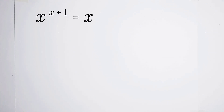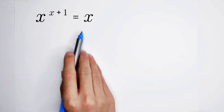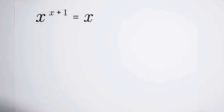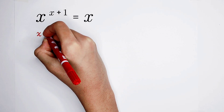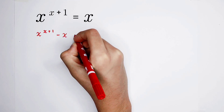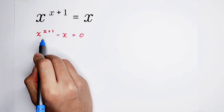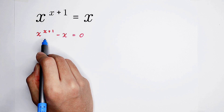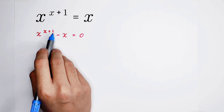What I'm going to do is subtract this x from the right hand side from both sides. So the left hand side is going to be x to the power of x plus 1 minus x, and the right hand side is 0. Now, this exponent x plus 1 is a little bit complicated, so I'm going to separate this x and 1.